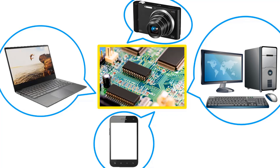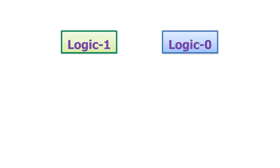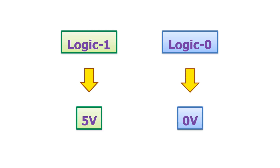This type of integrated circuit consists of circuits made with basic electronic elements such as transistors, resistors, and diodes. Logic gates form the basis of digital systems. Input information is transferred to the output by performing Boolean mathematics operations on the logical expressions logic 1 and logic 0. The logic 1 expression is defined as 5 volts, and the logic 0 expression is defined as 0 volts.